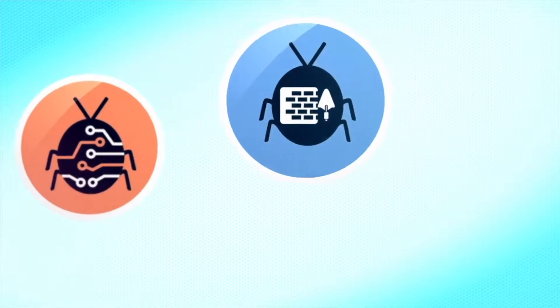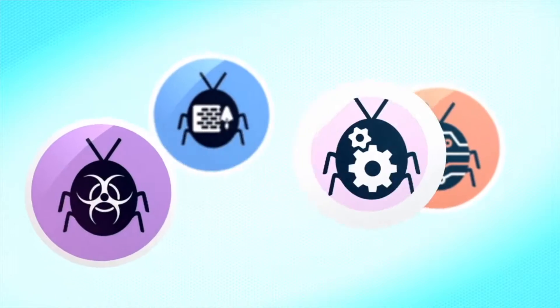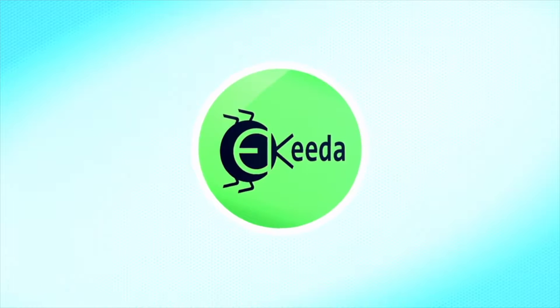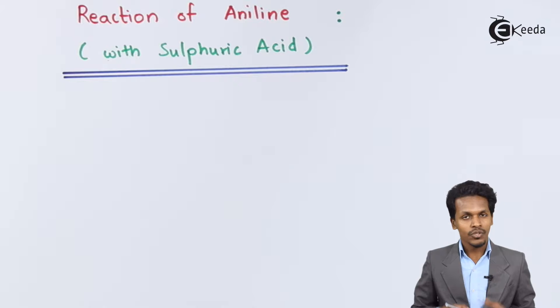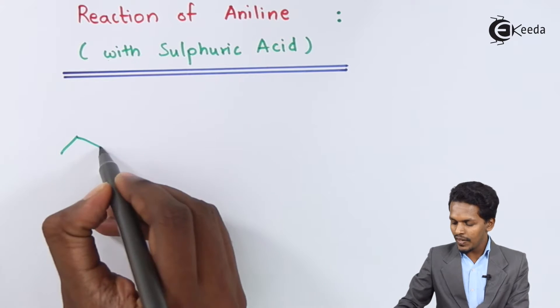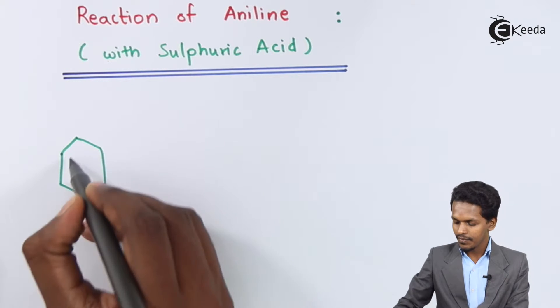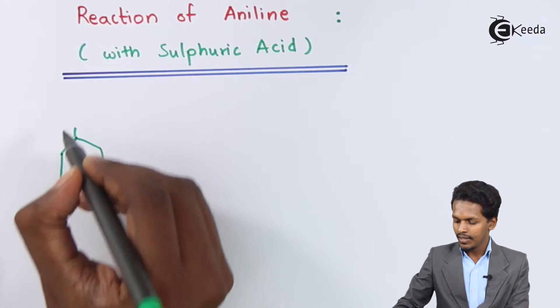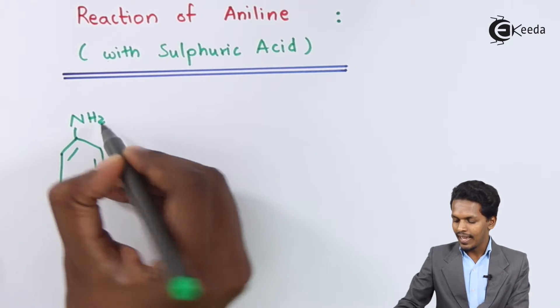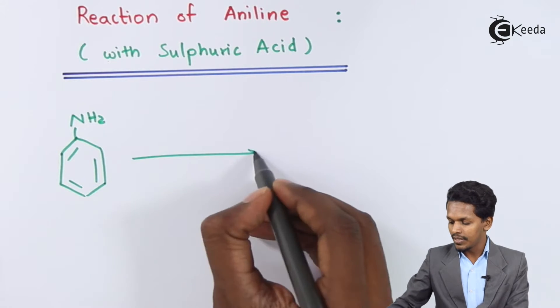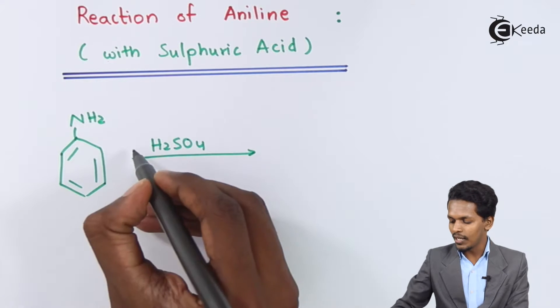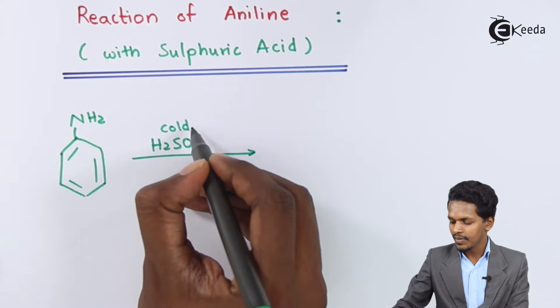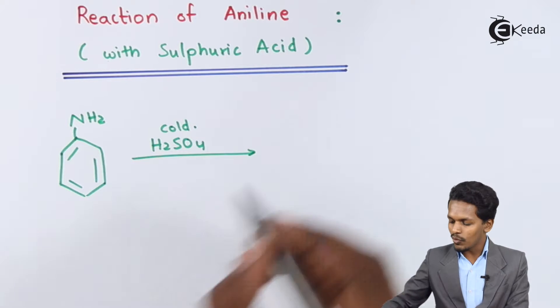In this topic we are going to talk about the sulfonation of aniline. So if we consider aniline, there is NH2, and suppose if we are treating it with sulfuric acid, H2SO4, in cold conditions.